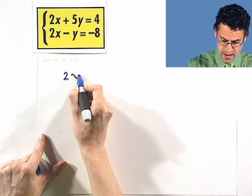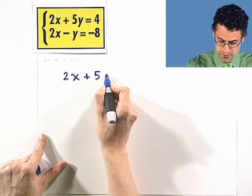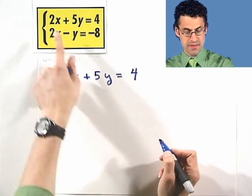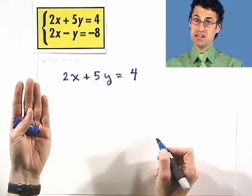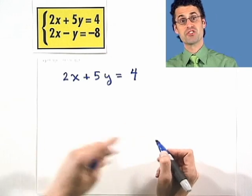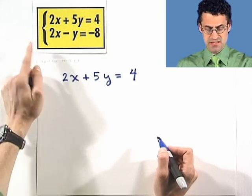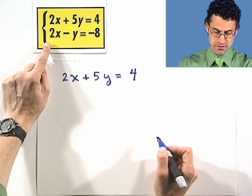I'm going to take my 2x plus 5y equals 4 and write it out. There's the first equation. I'm going to take the second equation and multiply both sides by negative 1. So if I multiply everything through by negative 1, what do I see?